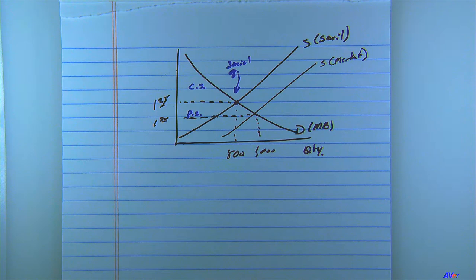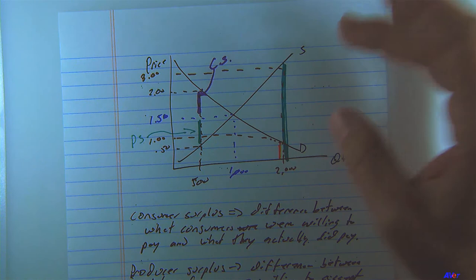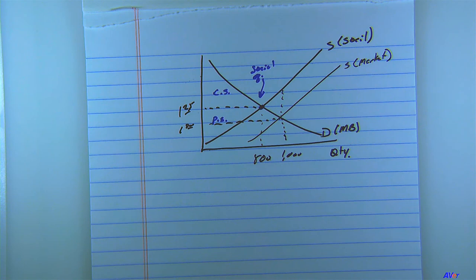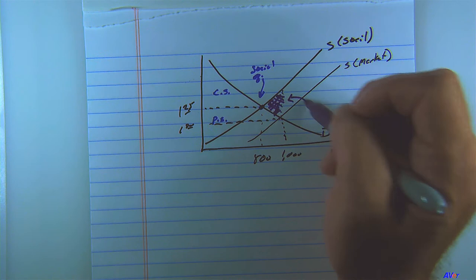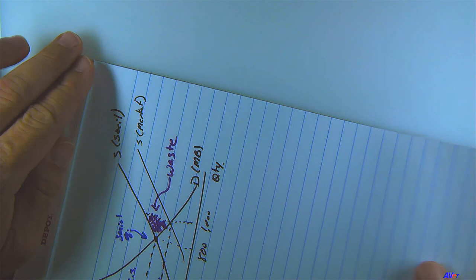But thanks to the fact that costs can be shifted to other people, it's just as if the social supply curve gets shifted down to the market cost curve, because the firm isn't paying those costs — they're shifting them to other people. That's when we get to our market equilibrium, where we're making too much of this good. Just like with consumer and producer surplus, we have additional costs — waste — because the market overproduces.